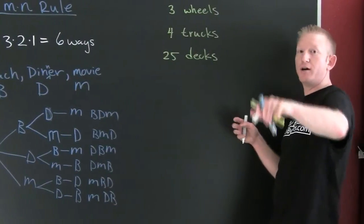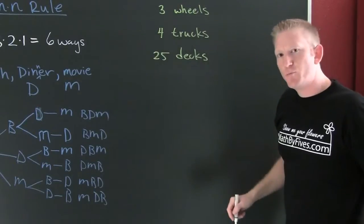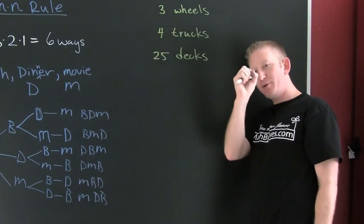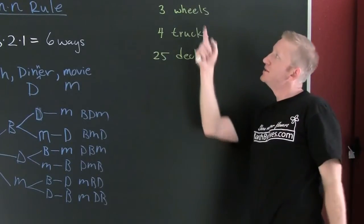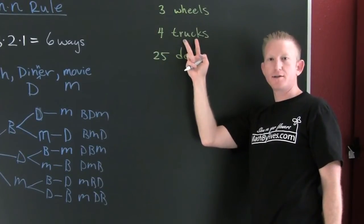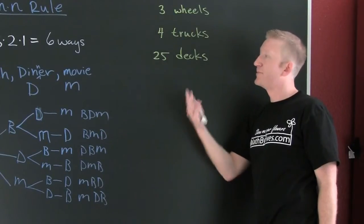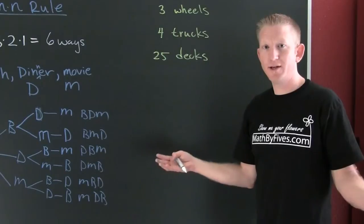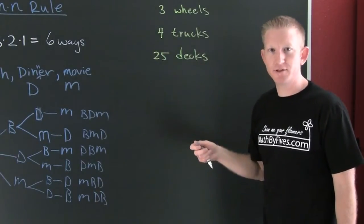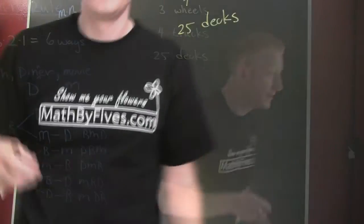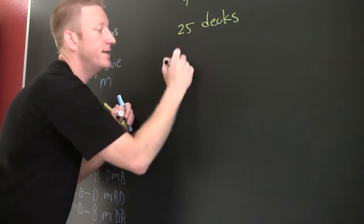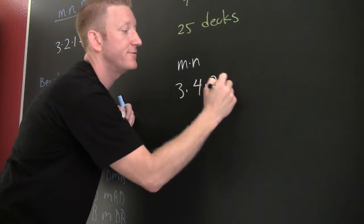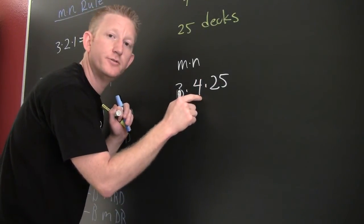Let's apply this to skateboards. In this skateboard shop, you have a choice of three wheel packages: little wheels, medium-sized wheels, and big fatty old-school wheels. You also have the choice of four trucks — those are the things that hold the wheels to the board — with different manufacturers and configurations. And then the big choice: the deck. That's what the board looks like. We want to see how many different skateboards we can make. The MN rule says we find the number of boards by taking three times four times twenty-five, because it happens in stages: first you choose your wheels, then your trucks, then your board.